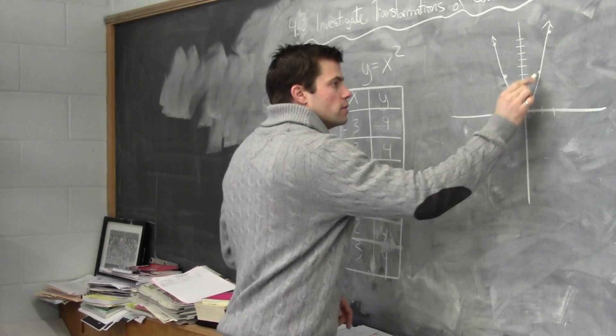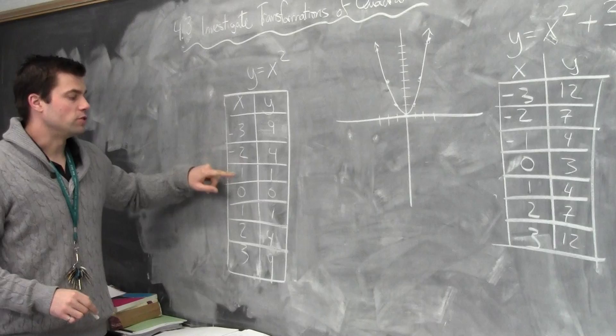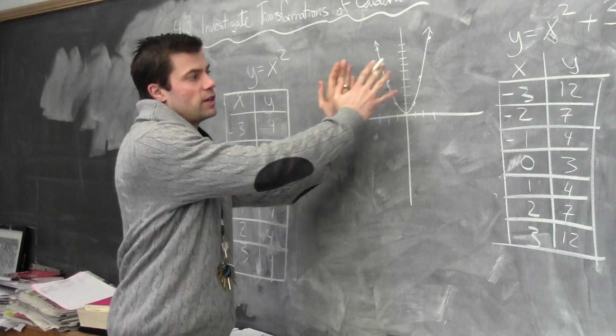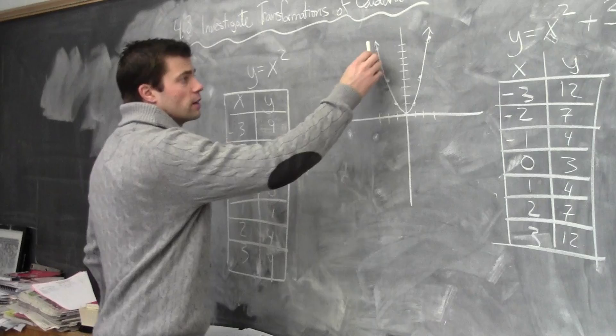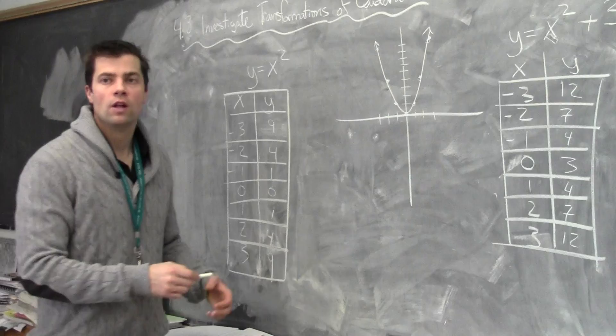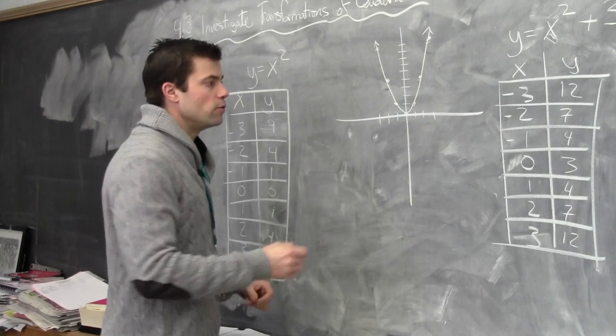Everyone should be able to follow along with that. I've chosen negative values because I know this particular quadratic exists on both the left-hand side and the right-hand side of the y-axis. If you notice with this quadratic — and this is a little bit more advanced — I'm going to tell you a shortcut method on how to graph this.